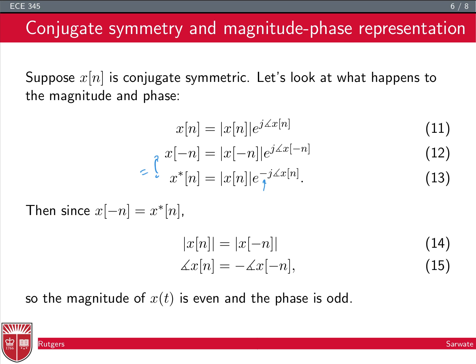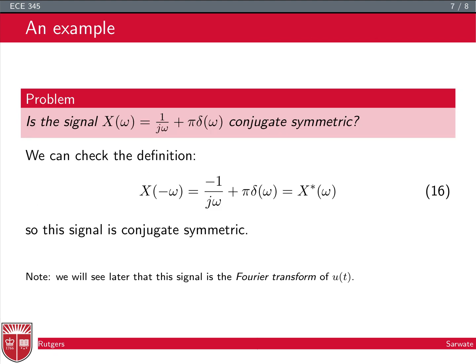Setting x(−n) = x*(n), their magnitudes must be equal and their phases must be equal. This means |x(n)| = |x(−n)|, so the magnitude is even, and ∠x(n) = −∠x(−n), so the phase is odd. In both Cartesian and magnitude-phase representations, conjugate symmetry implies standard even/odd symmetry for the respective components.